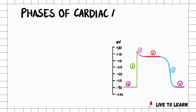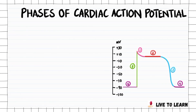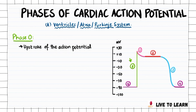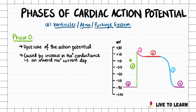Let's start with discussing the phases of the cardiac action potential in the muscles of the ventricles and atria, as well as in the Purkinje system. Phase 0, the part shown in green on the graph, represents the upstroke of the action potential. It is caused by an increase in sodium conductance — that is, an inward sodium current depolarizes the membrane.